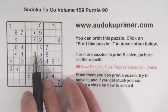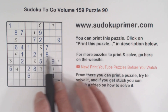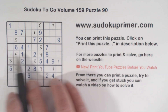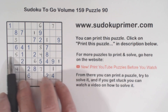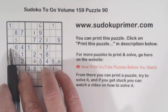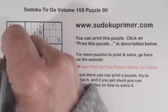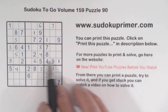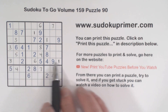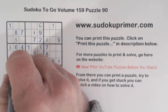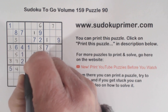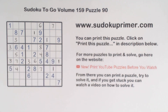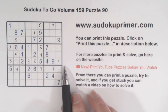Checking: seven and nine are there, so that makes that a three. We're only missing three and seven in row six — with this three we can put in a seven there and a three there, and we've finished that row.